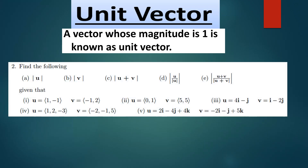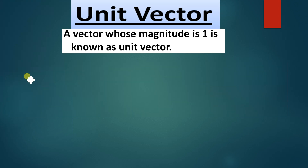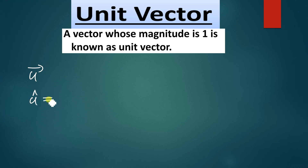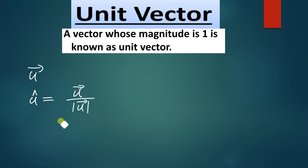Let us see how we can find the magnitudes of given vectors and their unit vectors. The representation of a unit vector: if you have been given the vector u and they've asked you to find the unit vector of u, the unit vector of u is represented by u-cap. This is equal to u divided by the magnitude of u — the vector u divided by the magnitude of the vector u gives us the unit vector.